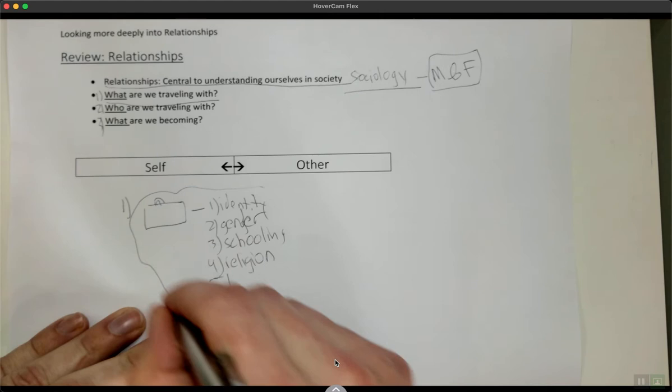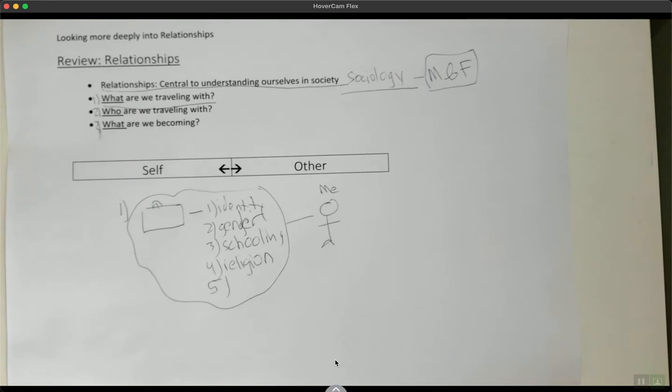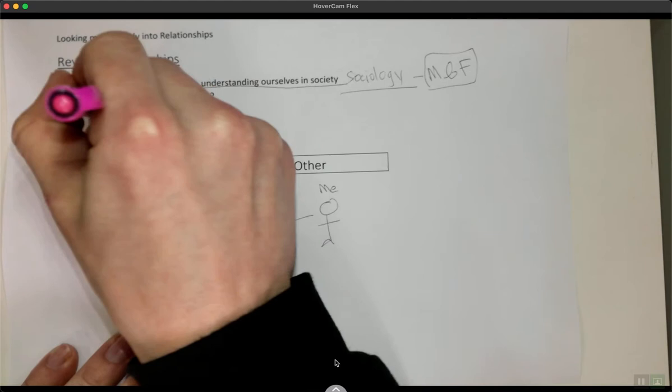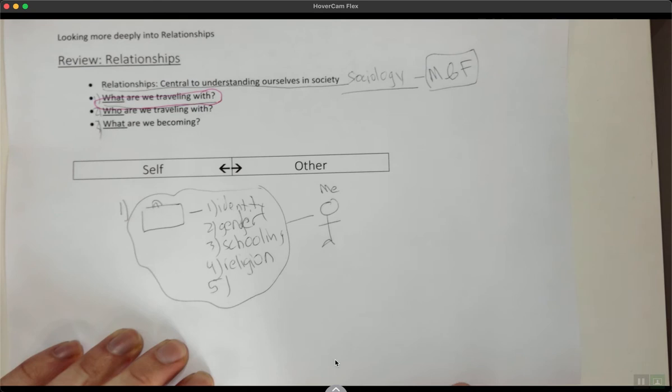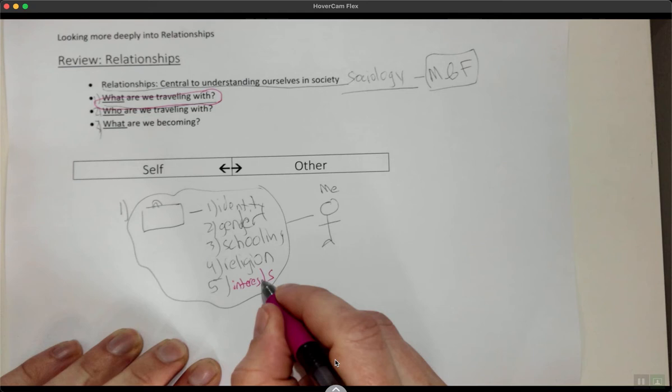So all of this is contained within ourselves. If this is me, I have all these things I'm bringing with me. If we're asking the overall question, what are we traveling with? What are we bringing to relationships? We could think about all these different things: identity, gender, schooling, religion, any other sort of thing, even just interests.